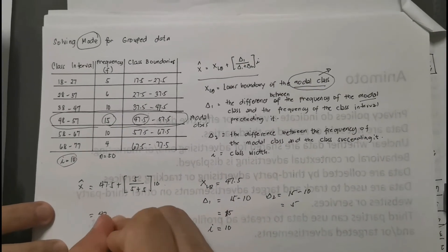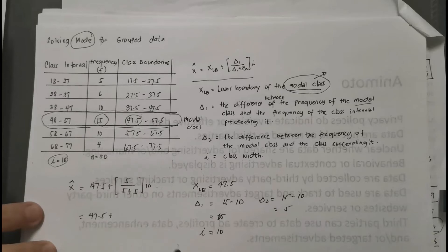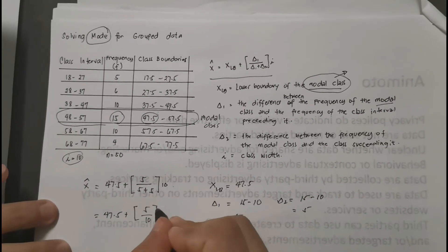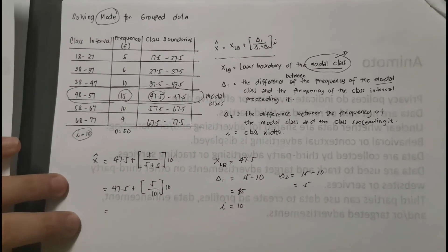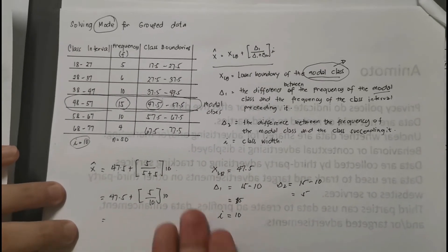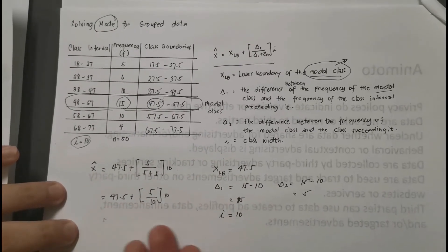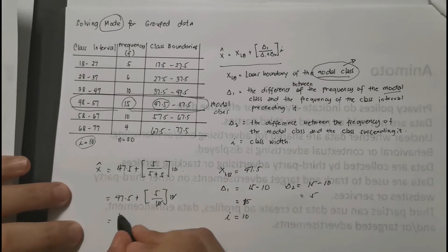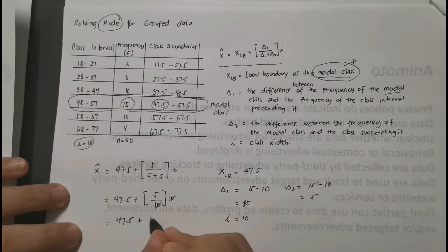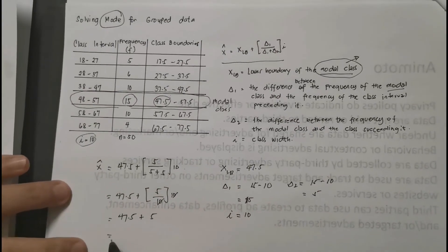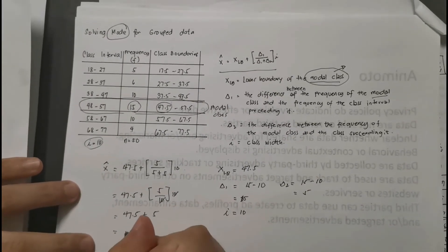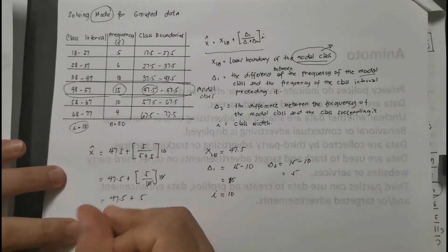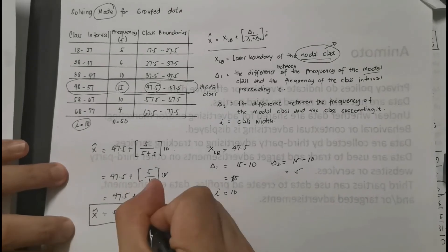Okay, that's 47.5 plus, well, that's 5 over 10 times 10. Well actually I can use a calculator to do it from here, but since this particular given is quite easy, of course I can cancel this one right away, which is 1 times 5. We will have 47.5 plus 5, and then added one, that is you have 52.5. So that is our mode. The mode of this given data set is 52.5.